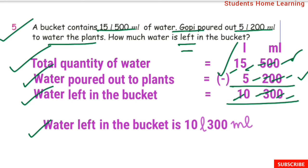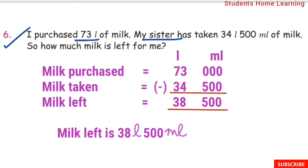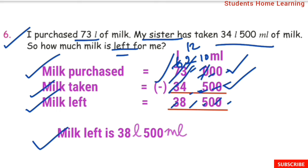Word problem 6: I purchased 73 liter of milk. My sister has taken 34 liter 500 ml of milk. How much milk is left for me? We apply subtraction. Milk purchased: 73 liter. Milk taken: 34 liter 500 ml. Subtraction: 0 minus 0 is 0, 0 minus 5 requires borrowing from next digit; borrow makes it 10 minus 5 is 5; 2 minus 4 requires borrowing again; borrow gives 12 minus 4 is 8; 6 minus 3 is 3. Milk left is 38 liter 500 ml.